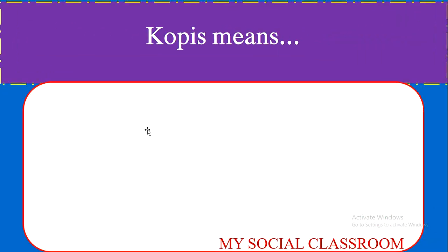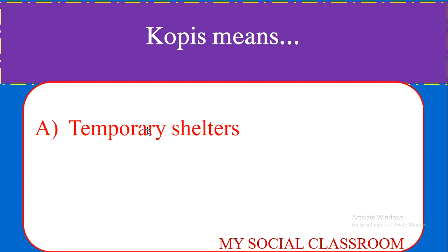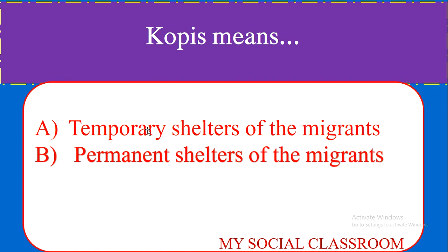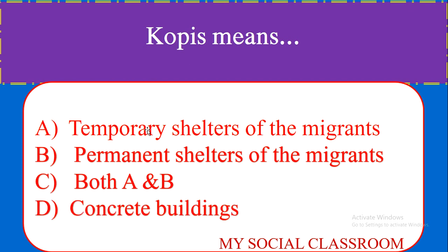Co-piece means: Temporary shelters of the migrants, Permanent shelters of the migrants, Both A and B, Concrete buildings built for migrants. Correct answer: Temporary shelters of the migrants.